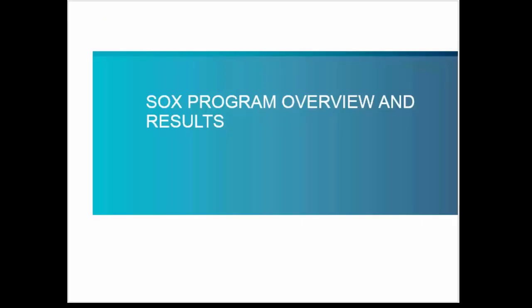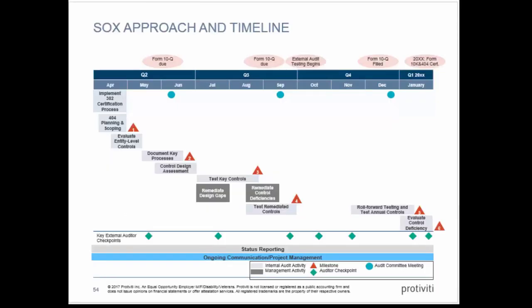Let's move to SOX program overview and results. There's been a tremendous evolution in ways of reporting SOX information to audit committees. The first example is most commonly used for companies in year one or the first couple years of SOX — it outlines a calendar of key activities and milestones. It shows internal audit obligations as well as management obligations with different colored bars, checkpoints with the external auditor, and overlays the audit committee meeting schedule. This sets a foundation and measures progress throughout the year.